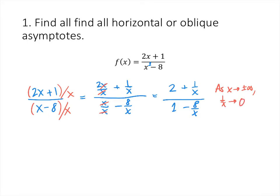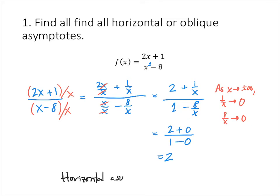Imagine that x is a billion — 1 divided by a billion is a very, very small number. And 8 over x is also going to go to 0, because 8 divided by a billion is still a really small number. So in the end behavior, this is going to look very much like 2 plus 0 divided by 1 minus 0, which is 2. And that tells us that we have a horizontal asymptote y equals 2.